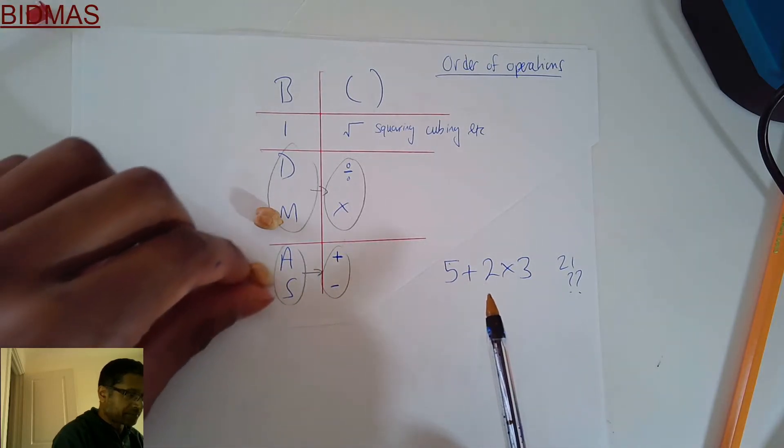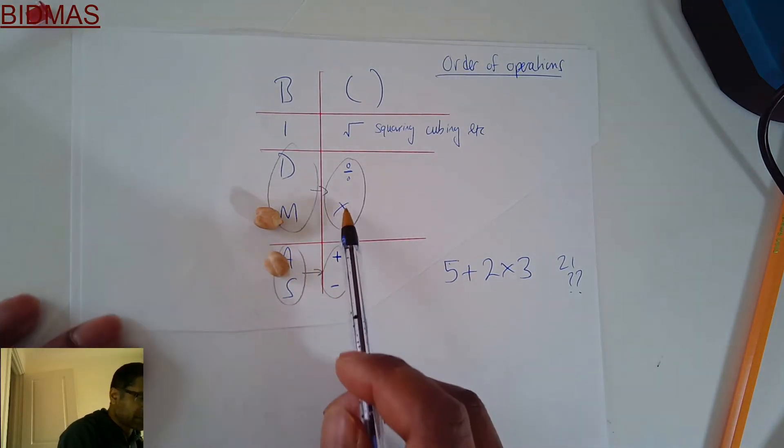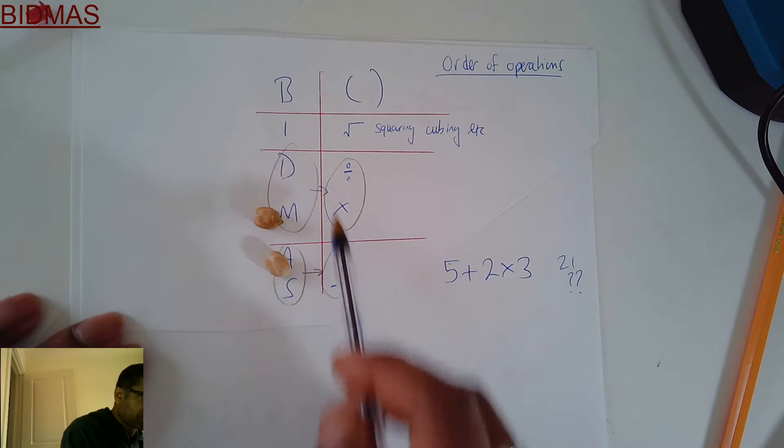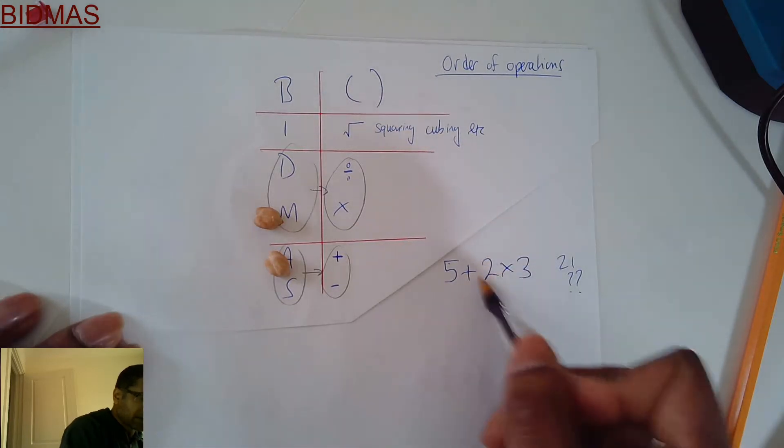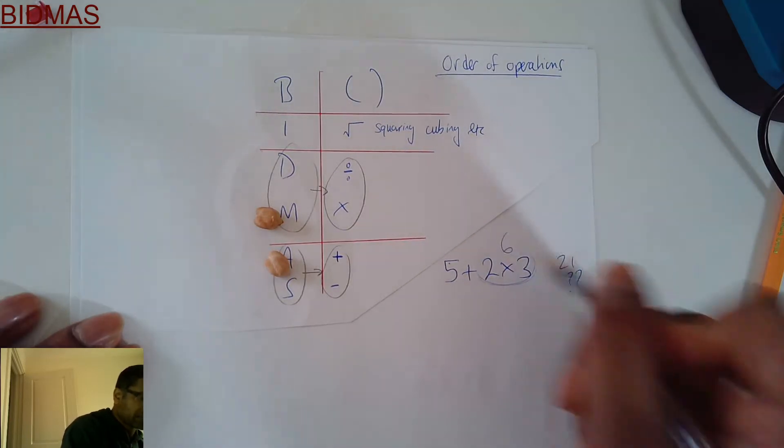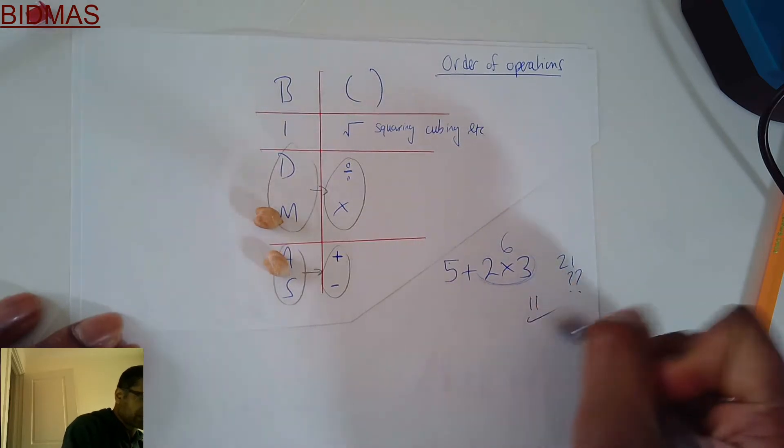Now clearly times-ing is above adding, is higher up the chart, so you do the times-ing bit first. 2×3=6, so all of that becomes 6.